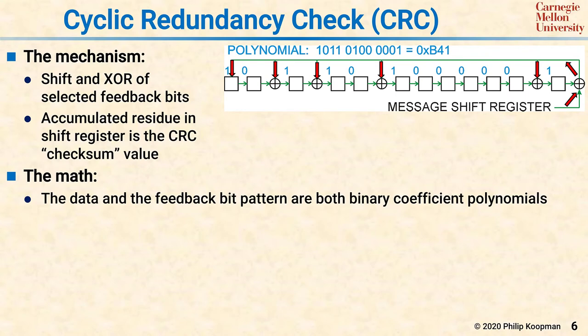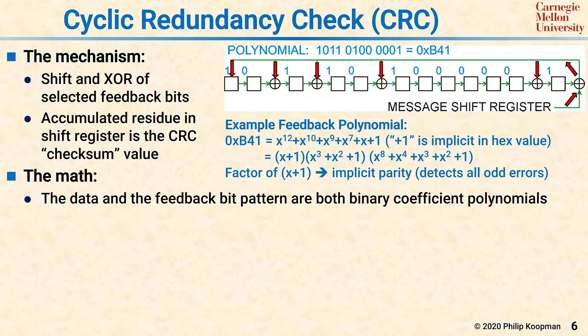The math is based on polynomial division. The way to conceptualize this is that the shift register has binary values in it — those are the data bits inside the boxes — but also has a feedback polynomial, where a 1 in the binary polynomial value corresponds to a place where the feedback is inserted into the shift register, and a 0 corresponds to a place where there is no feedback and the bit is simply transferred from a box on the left to the box on the right. In this picture, the red arrows into the feedback correspond to 1s in the polynomial shown at the top.